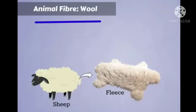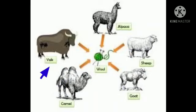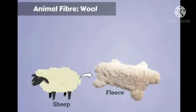Wool is an animal fiber obtained from the fur or hair of certain animals like sheep, camel, goat, yak, etc. And this thick coat of fur or hair is called fleece.